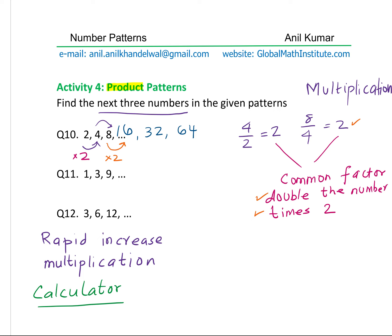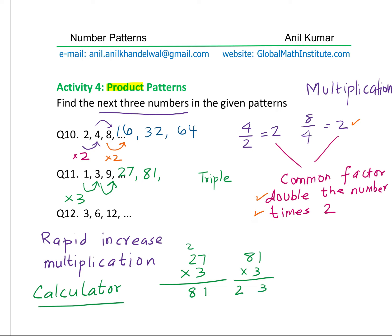Question number 11: the numbers are 1, 3, 9. So 1 times 3 and 3 times 3 — it is times 3, so we are going to triple. So 9 times 3 is 27. Then 27 times 3: 3 times 7 is 21, carry 2, 3 times 2 is 6, plus 2 is 8 — we get 81. And 81 times 3: 3 times 1 is 3, 3 times 8 is 24 — we get 243. That is how we get our pattern.